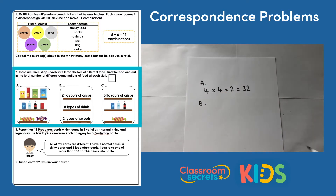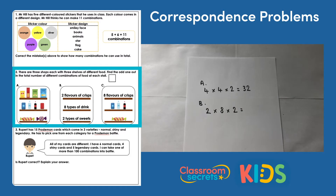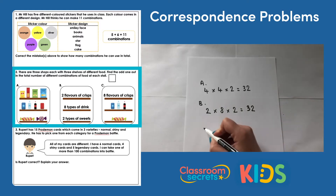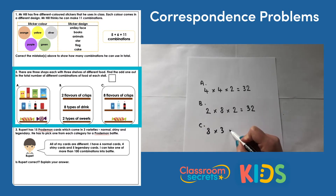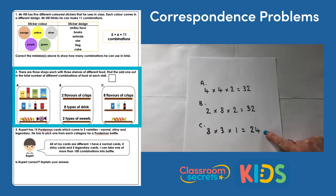For shop B we have two flavours of crisps, eight types of drink, and two types of sweets. This one's different because it's written rather than showing us images. We do the calculation: 2 times 8 is 16, and 16 times 2 is 32 — the same as shop A. For shop C: eight flavours of crisp, three types of drink, and one type of sweet. So 8 times 3 is 24, times 1 is still 24. Shop C has 24 combinations, making it the odd one out, whereas A and B both have 32.